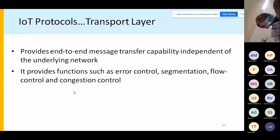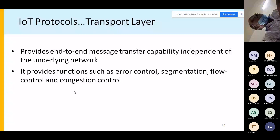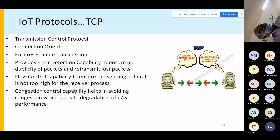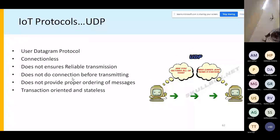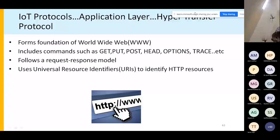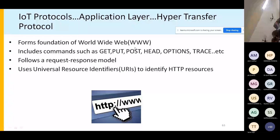The transport layer is responsible for end-to-end message transfer and must work with both IPv4 and IPv6. Standard functions include error control, segmentation, flow control, and congestion control. The two protocols used are TCP and UDP — both well-known protocols that don't require detailed discussion here.